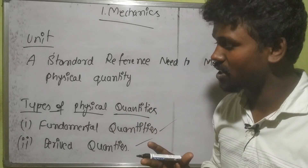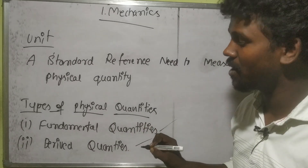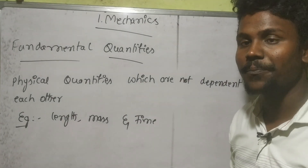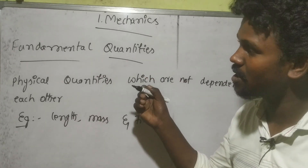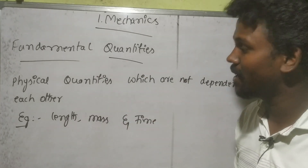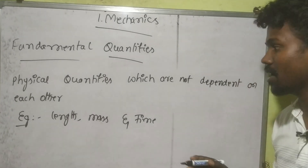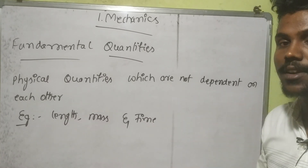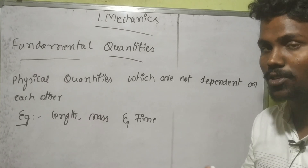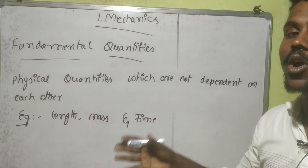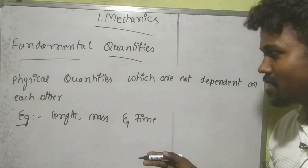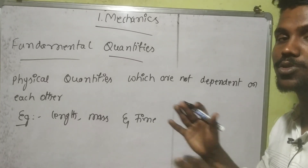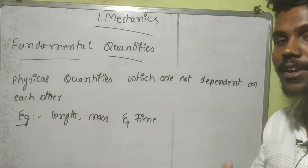There are two types of physical quantities: fundamental physical quantities and derived physical quantities. Fundamental quantities are physical quantities which are not dependent on each other. Examples of fundamental quantities are length, mass, and time — none of these depend on one another.